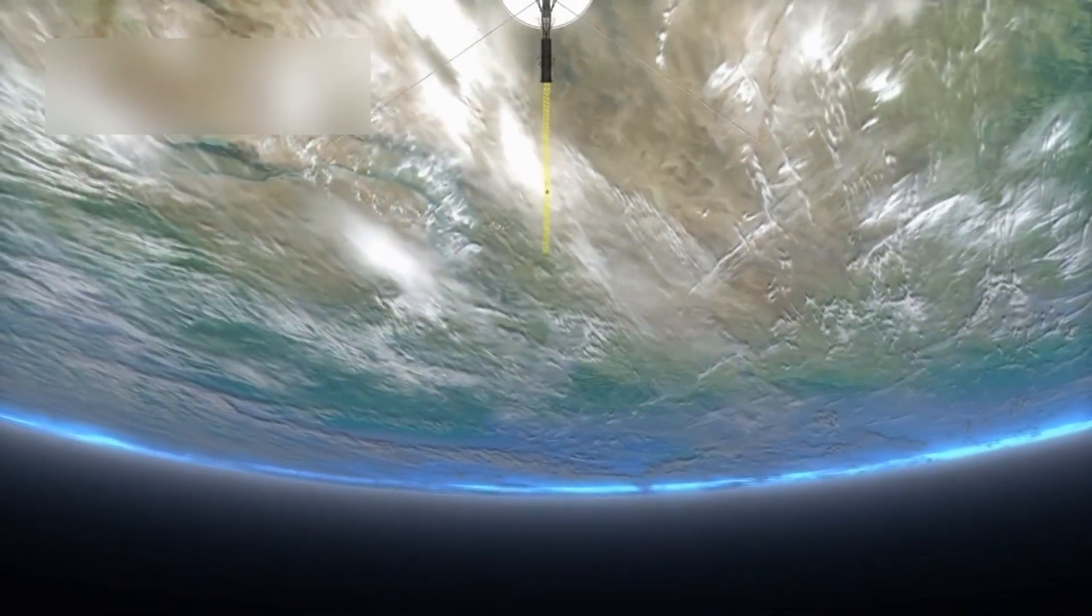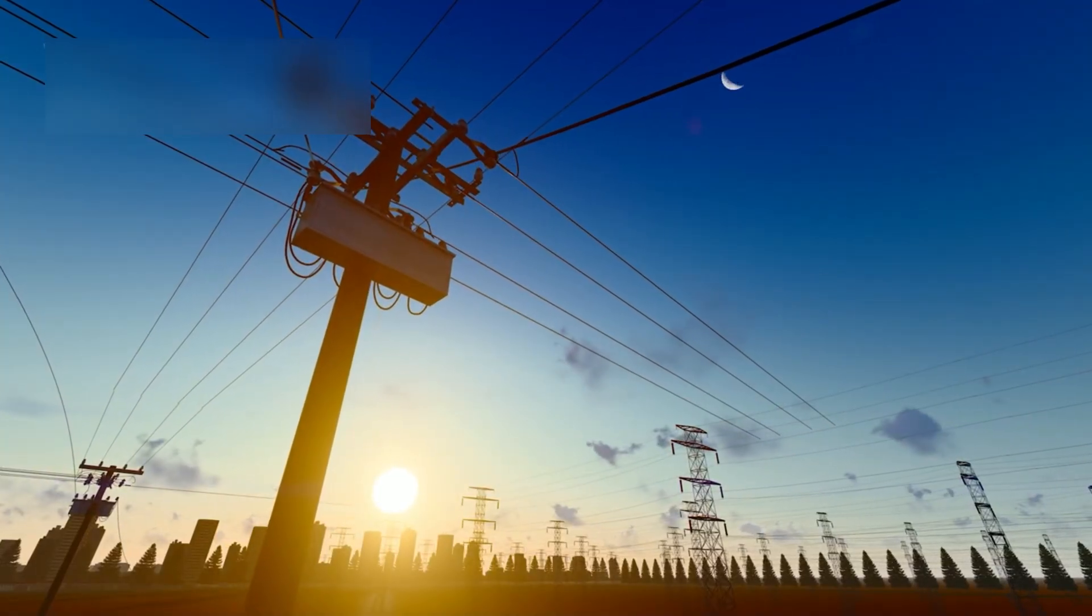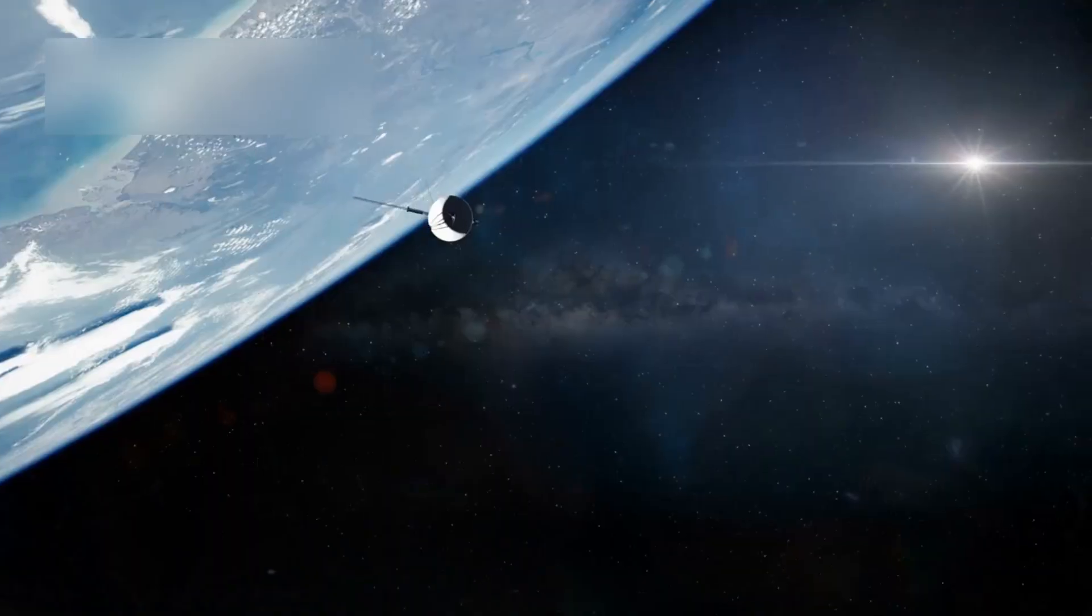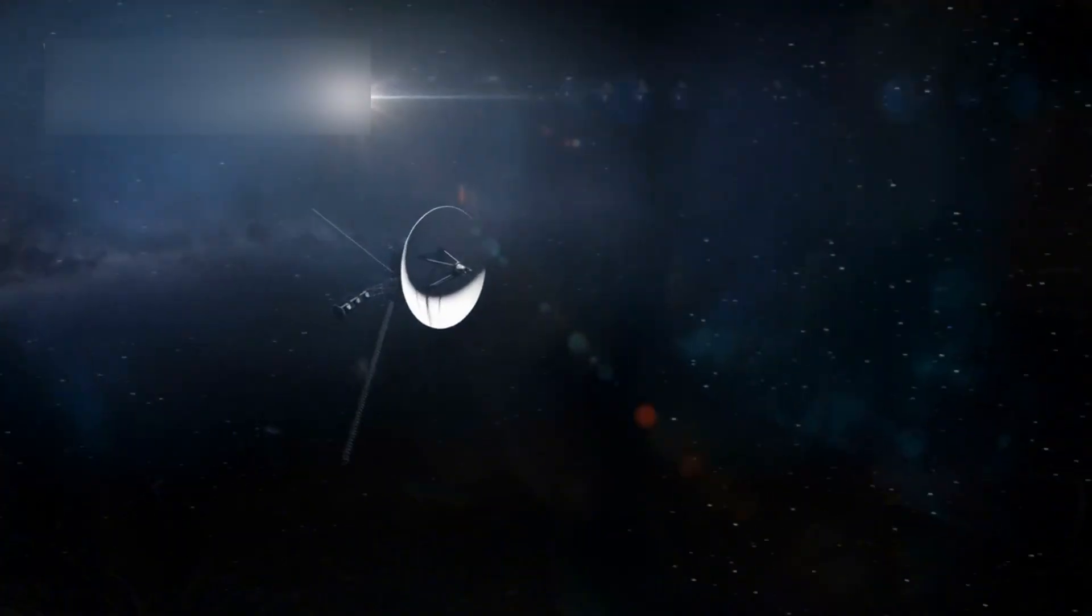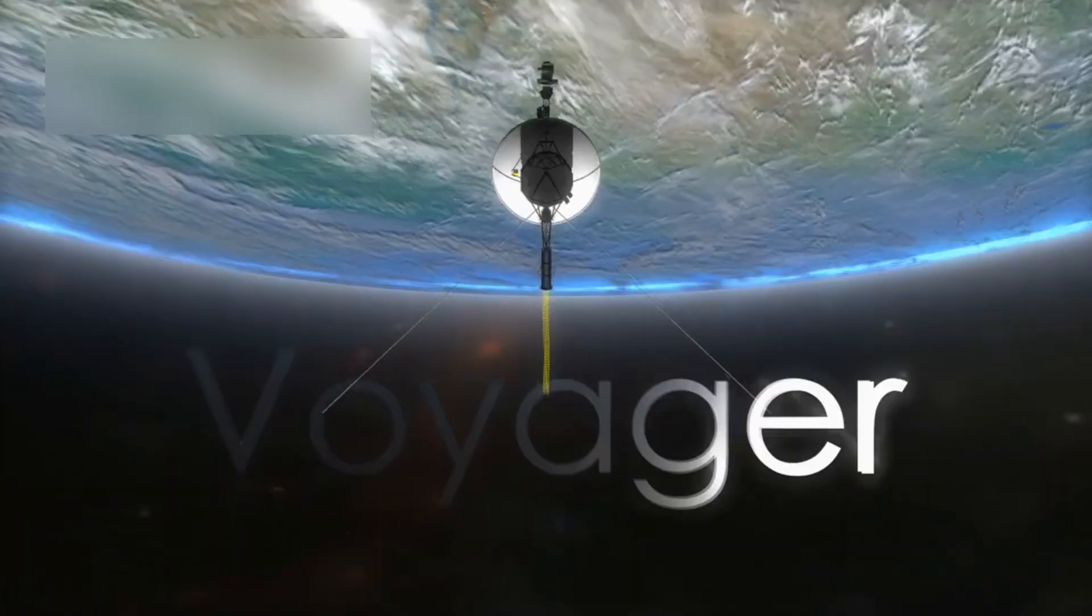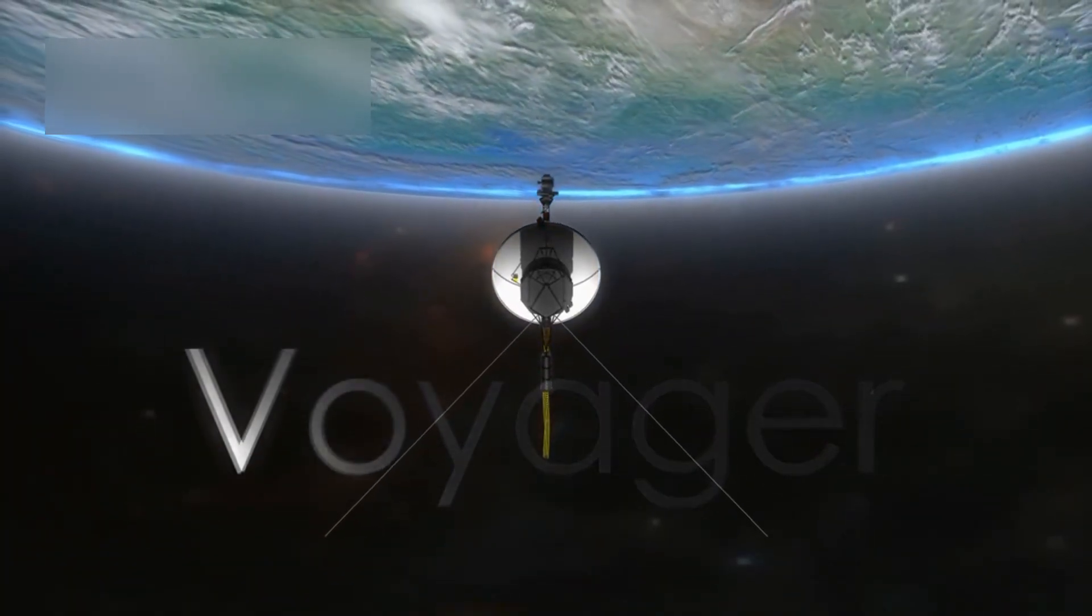The spacecraft continues to face serious challenges. Communication with Earth takes about 19 hours one way, and its power supply is dwindling. To save energy, NASA has had to shut down non-essential systems, leaving only the most critical instruments running. Still, Voyager 1 keeps transmitting valuable data, proving how well it was built.